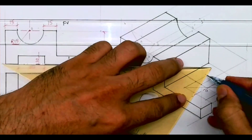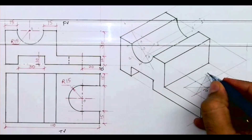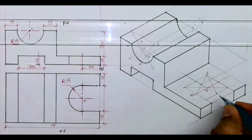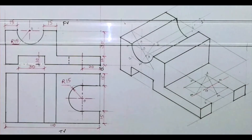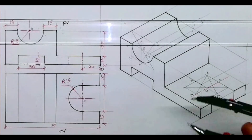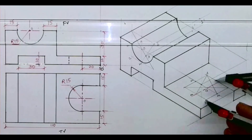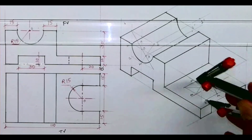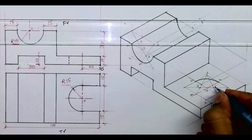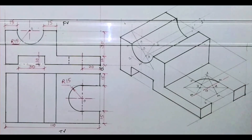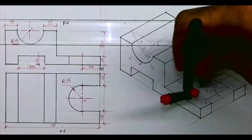Then follow the same method — four-center method. Draw the longest diagonal: points 1, M, 2, M, 3, and 4. From points 3 and 4, and from 3 to M, we can draw the arc.